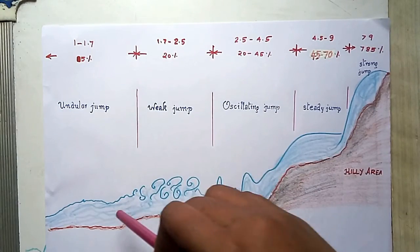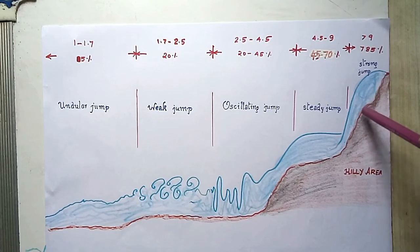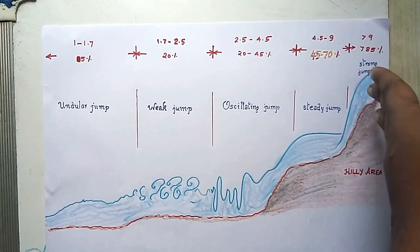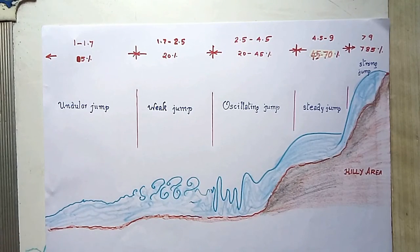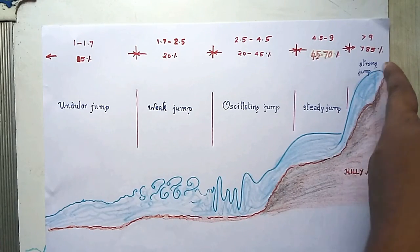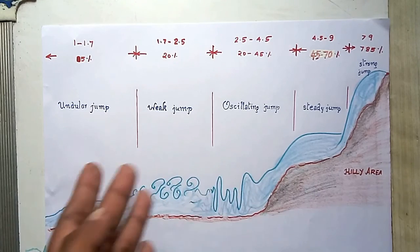From this, you can get an idea of how Froude number is influencing the effectiveness of hydraulic jump formation. If it is like the formation of the river, if it is at the initial stage or near the origin, the jump will be highly strong. As the river flows downstream towards its distributaries, as the distance of the river from the origin increases, the efficiency of the jump decreases and energy dissipation decreases.